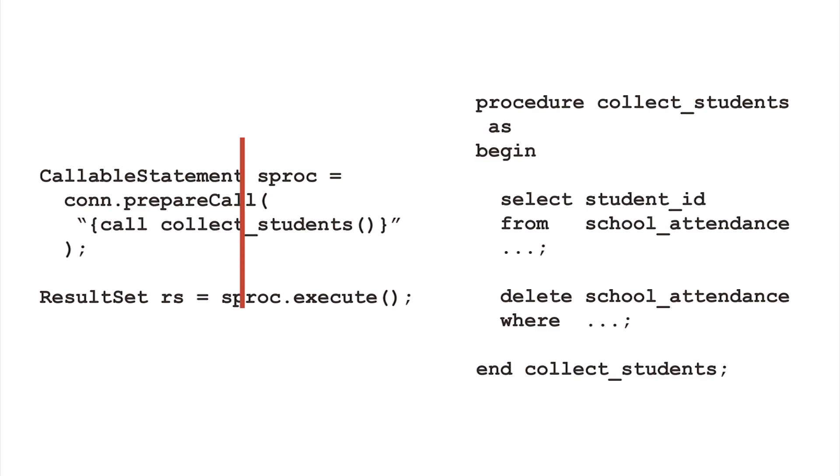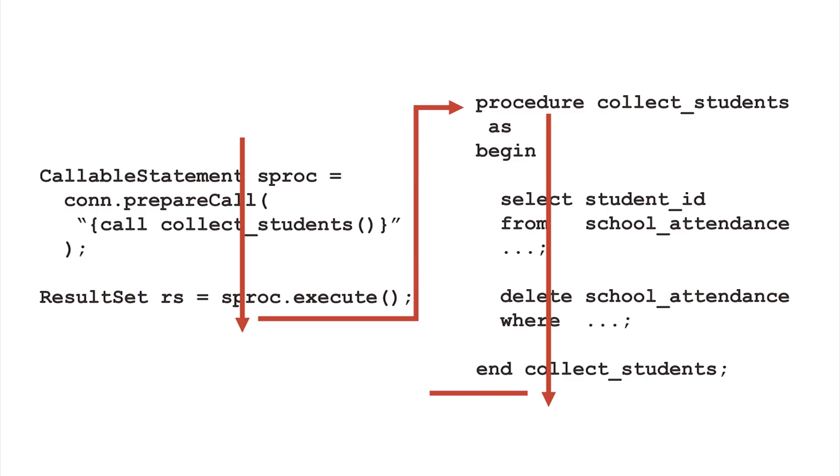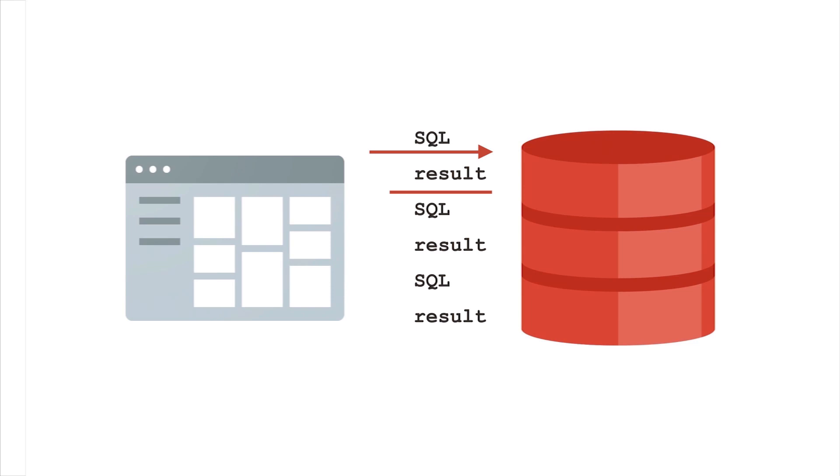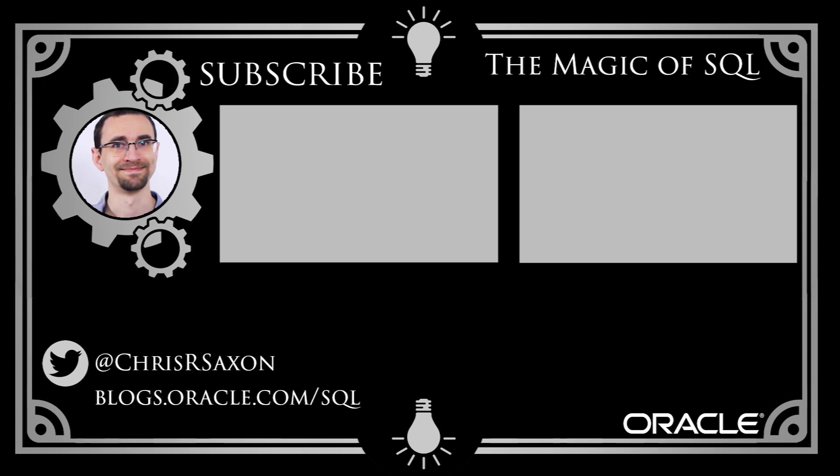Stored procedures are code compiled into the database which can contain many different SQL statements. In Oracle Database, this is PL/SQL. When you call the procedure, the database runs all the SQL within it, only returning control to the application once the procedure finishes. This can drastically reduce the number of round trips you need to make to the database, leading to faster code. When tuning applications, first figure out what precisely customers are complaining about. Then profile the code execution to see the slowest parts — there's no point tuning a SQL statement that makes up a tiny fraction of the overall runtime. It could be that you need to minimize calls to the database, or there's a SQL statement you need to make faster. Let us know your favorite profiling tools in the comments, and subscribe for more SQL tips.